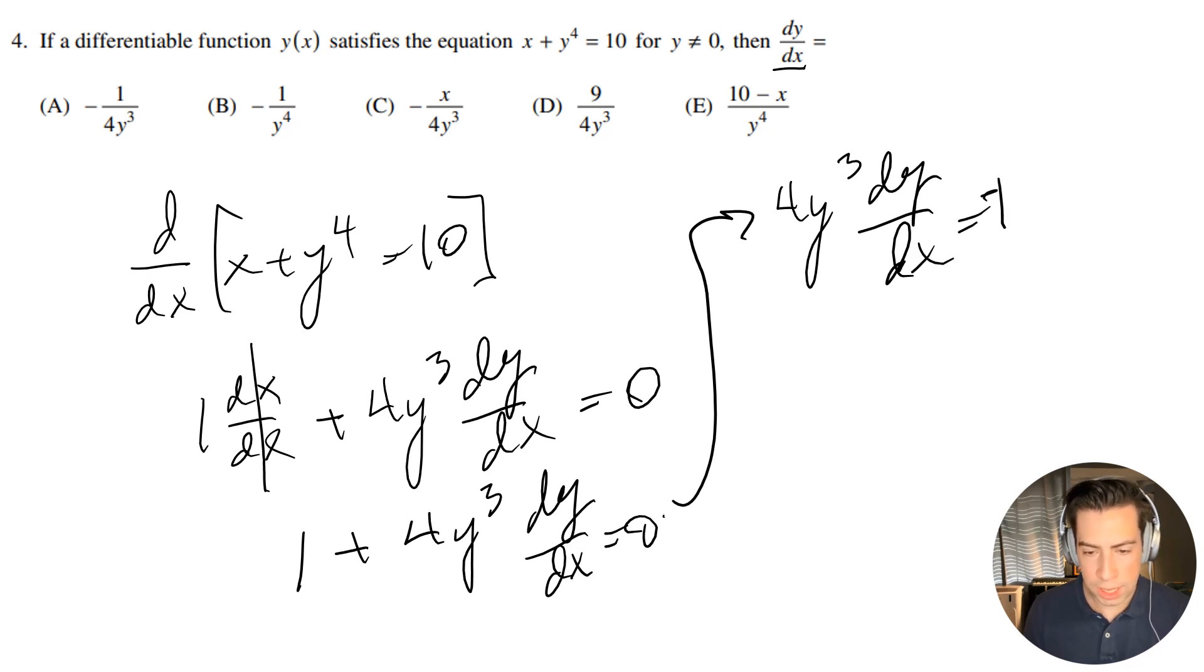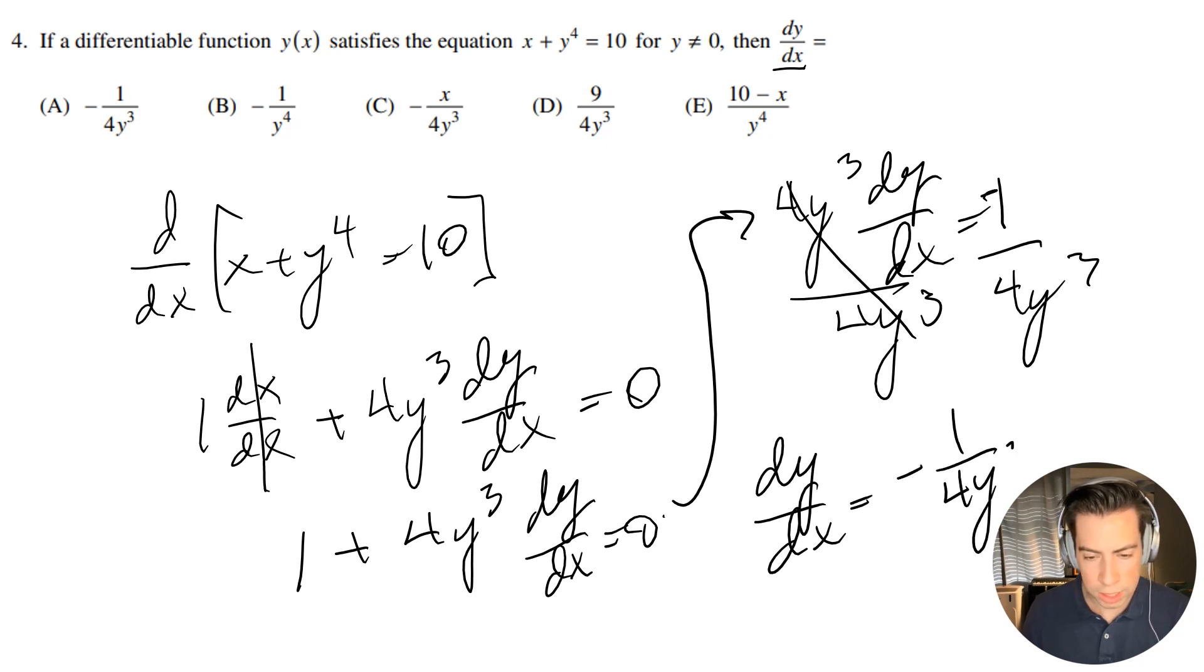And I can divide both sides by 4y^3. So I'm going to end up with dy/dx = -1/(4y^3).